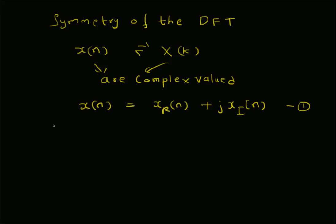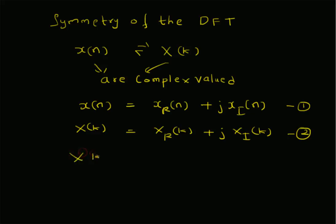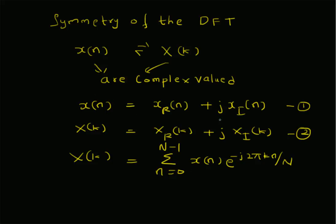Similarly, for the DFT sequence, that is for x of k, you can write it as x r of k, that is the real part, plus j times x i of k, that is the imaginary part. Now recall that the definition of x of k in terms of the sequence x of n is given by: x of k equals the summation n equal to 0 to N minus 1 of x of n times e to the power minus j 2 pi k n by capital N. Given this definition and the representation of x of n as x r of n plus j times x i of n, we can plug this into the definition and write x of k as follows.